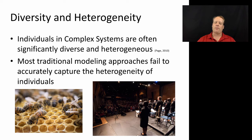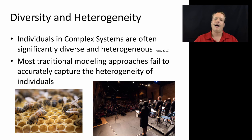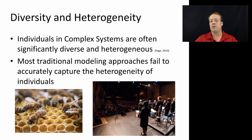Another example is the standing ovation problem: how do people decide when to stand and applaud a performance? If everyone made their decision based purely on a quality signal with the same threshold, you probably would not see very many standing ovations. But we actually see quite a few. One theory is that some people have a lower threshold to stand, and others have a higher threshold that can be lowered by seeing people around them stand — social pressure. That diversity in thresholds leads to more standing ovations, which is what we seem to observe.